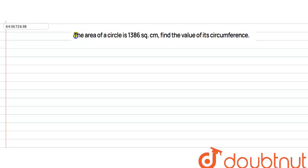In this question, we are given that the area of a circle is 1386 square centimeters, and we need to find the value of its circumference.